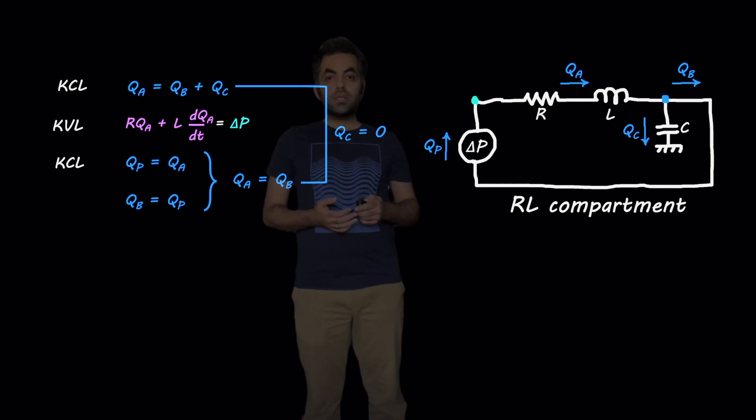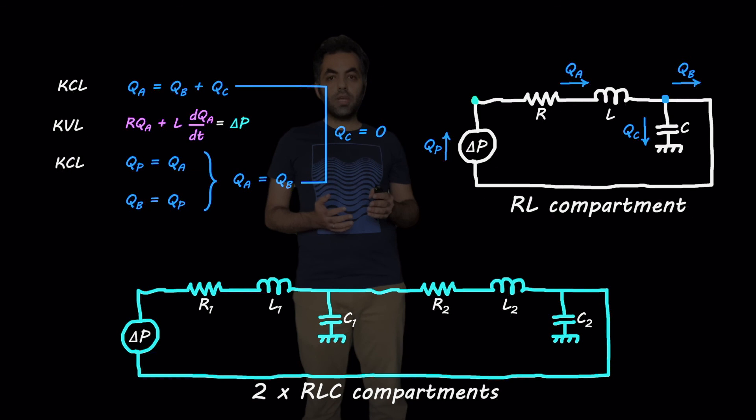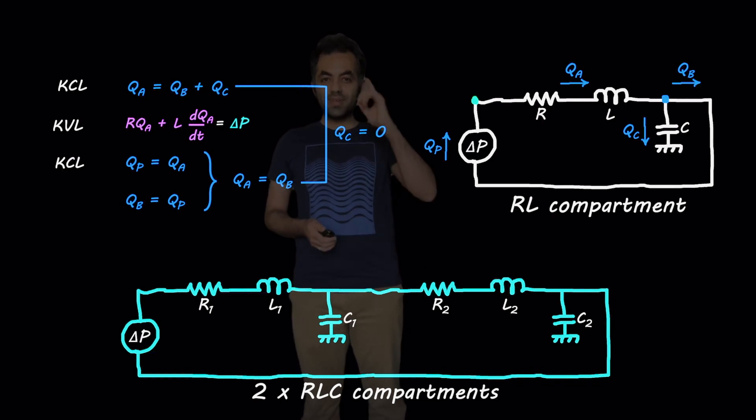But is it true what we saw here about a circuit with multiple RLC compartments? For example, if we have two RLC compartments, is the flow through these capacitor elements, is it still zero? The short answer is no. But we will go through it in more details in the next video. Until then, bye.